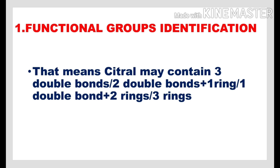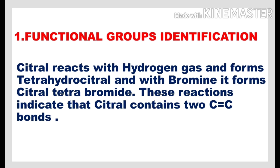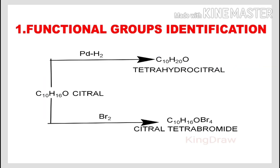That means citrol may contain three double bonds, or two double bonds and one ring, or one double bond and two rings, or it may have three rings in its structure. Citrol reacts with hydrogen gas and forms tetrahydrocitrol, and with bromine it forms citrol tetrabromide. These reactions indicate that citrol contains two C-C double bonds in it.